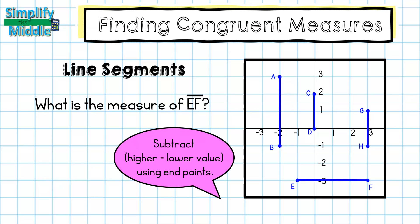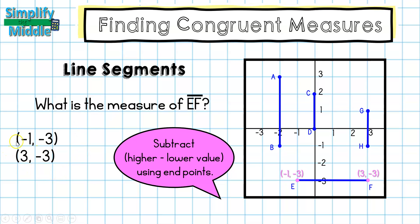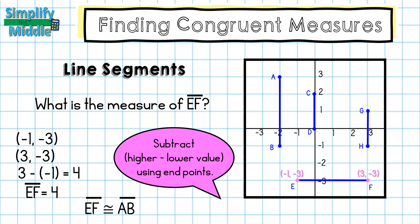For line segment EF, I'm going to use the other strategy. E is at (-1, -3) and F is at (3, -3). I'm going to subtract the higher and lower values using the endpoints. I notice the y-values are the same, and 3 is bigger than -1, so I write 3 minus -1, which gives me 4. Both EF and AB have a value of 4, so they are congruent.